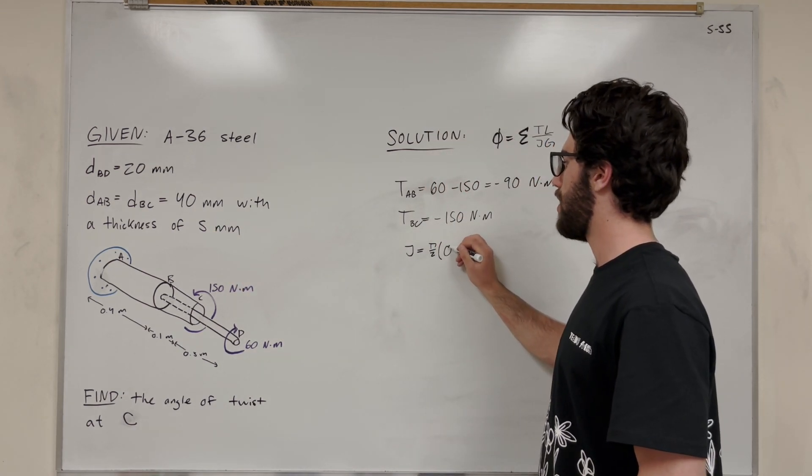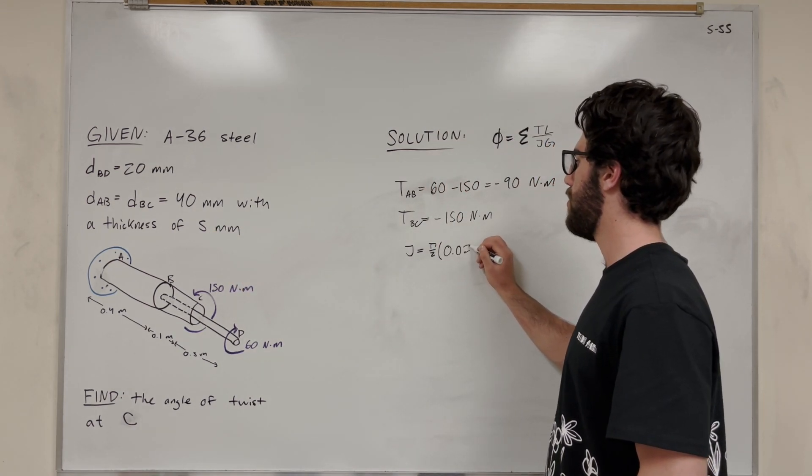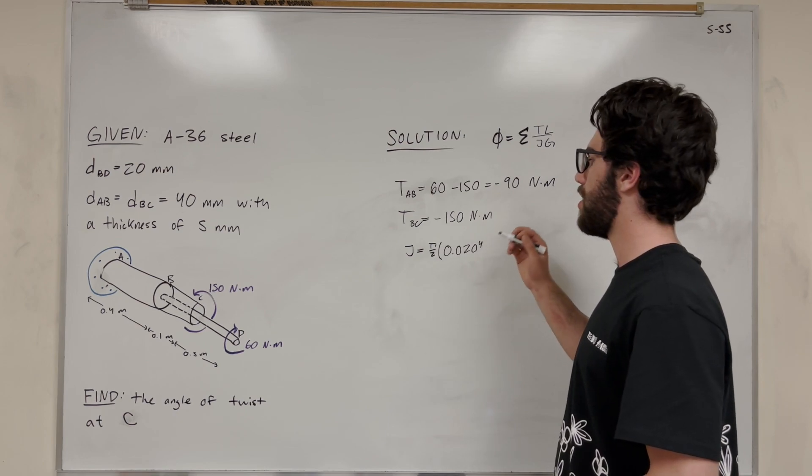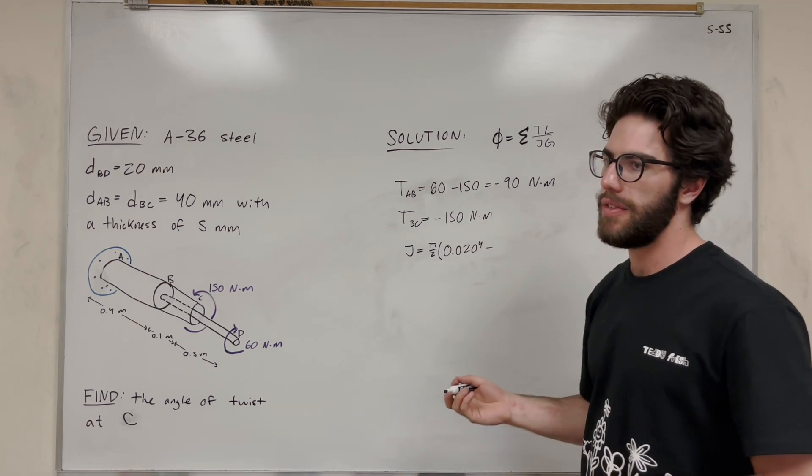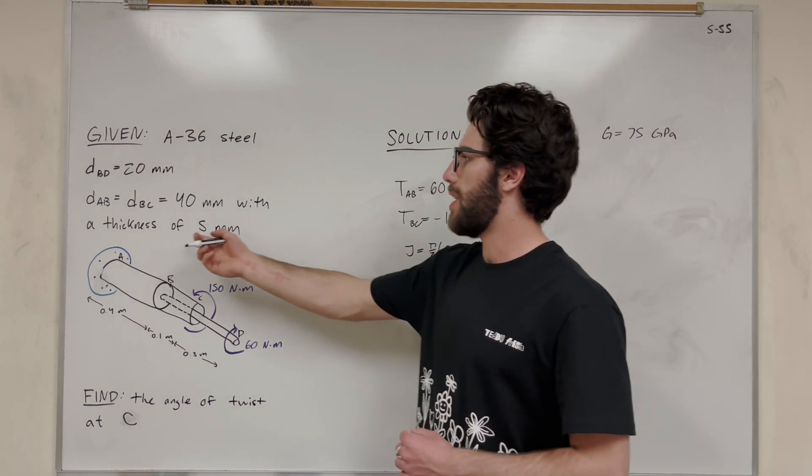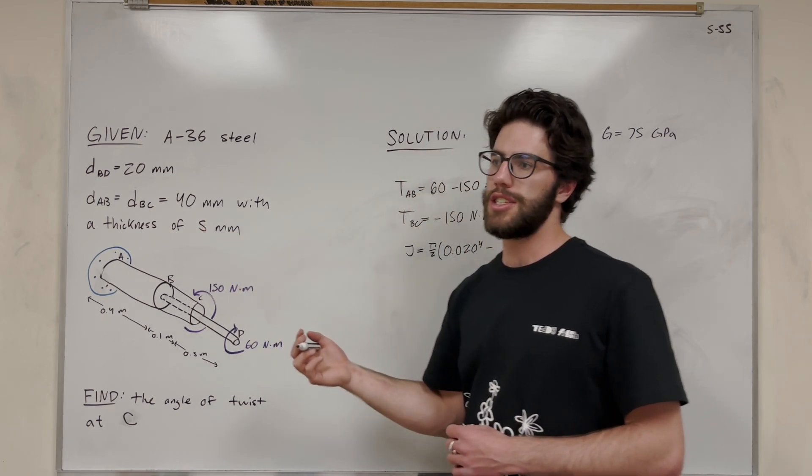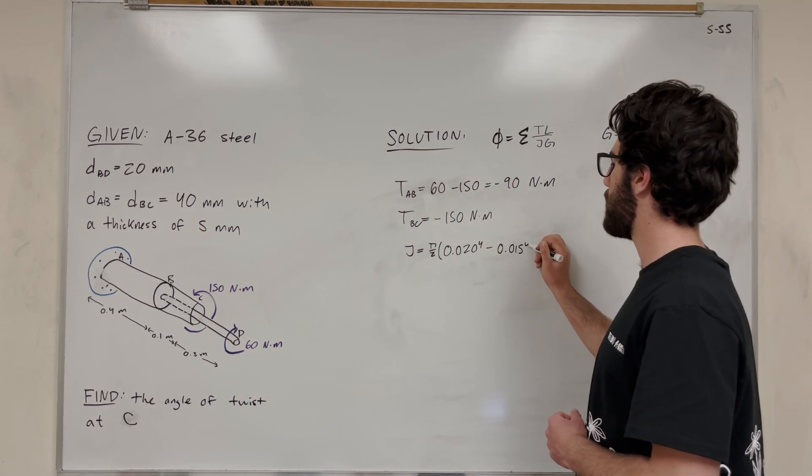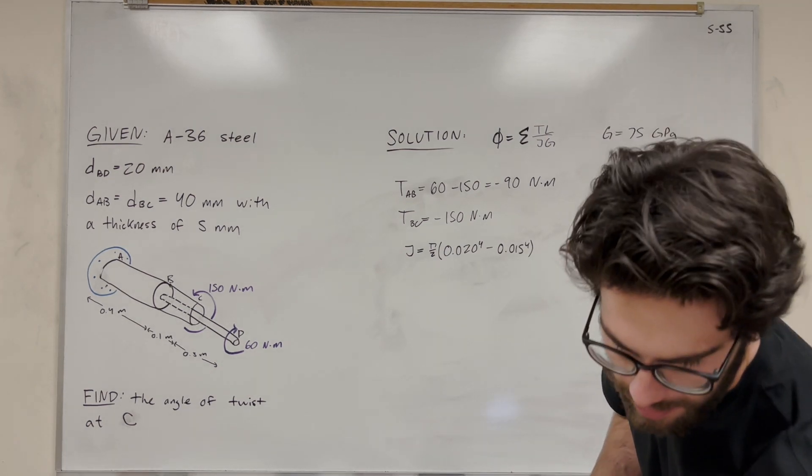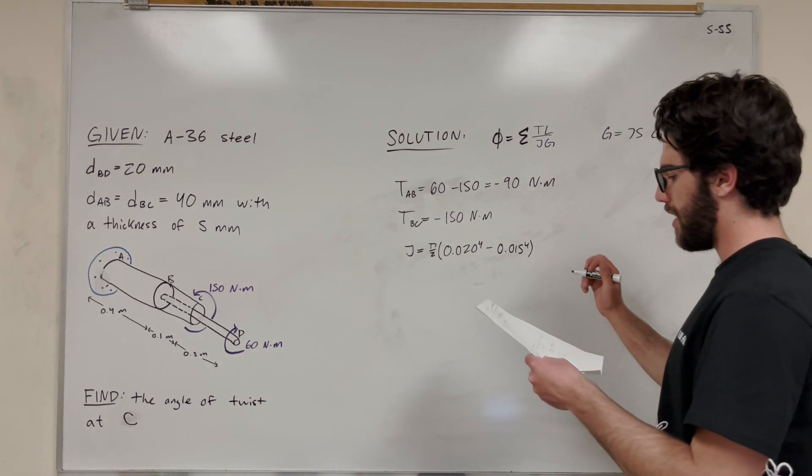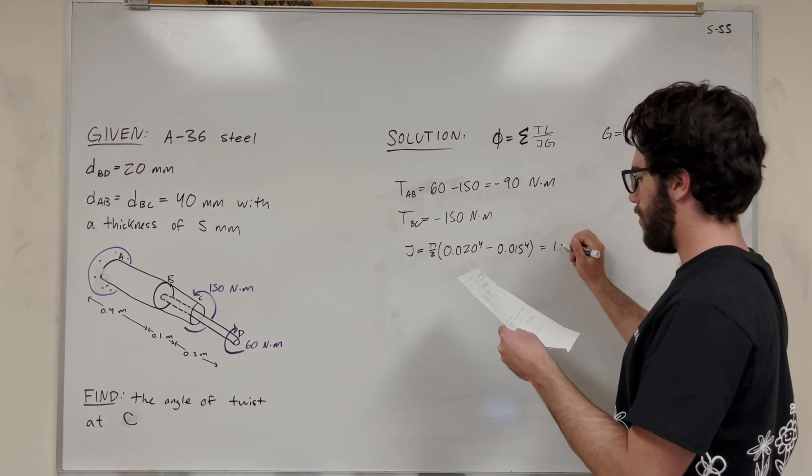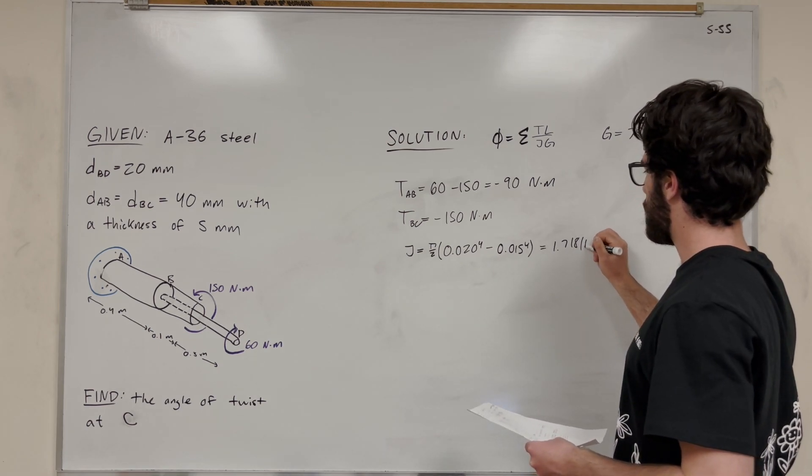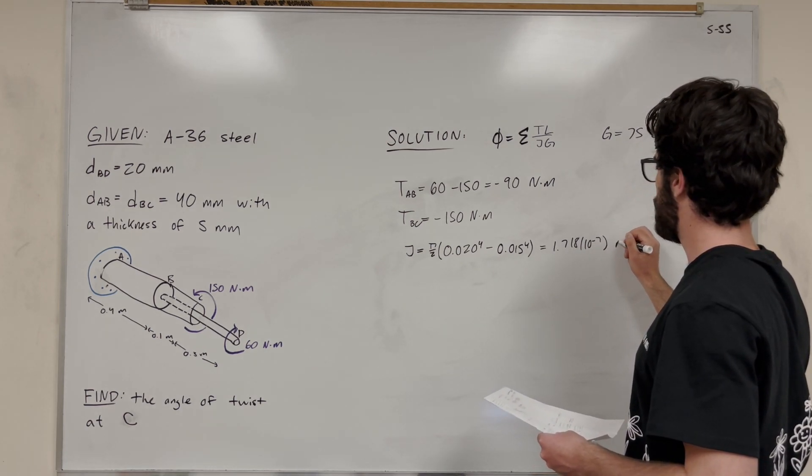So what we're going to do is take that outer radius, 0.020, raise it to the fourth. Then we're going to subtract it from the inner radius. Now because the thickness is 5mm, the inner radius is just going to be this minus 5, so 0.015 to the fourth. Plug this into your calculator, you get 1.718 times 10 to the negative seventh meters to the fourth.